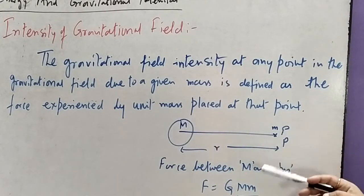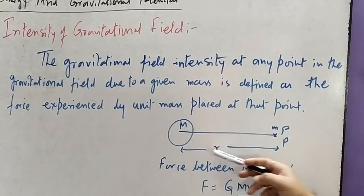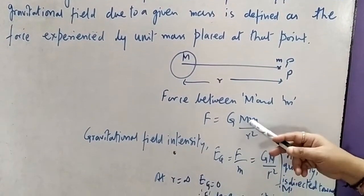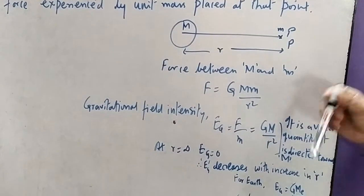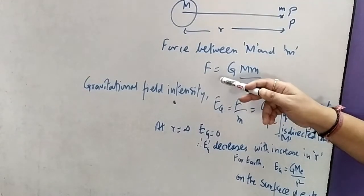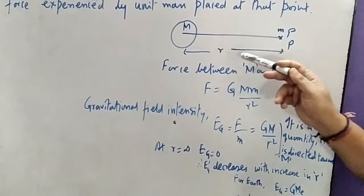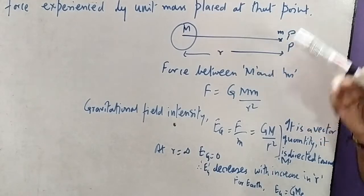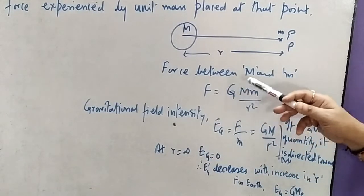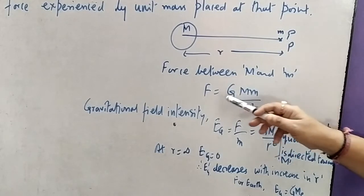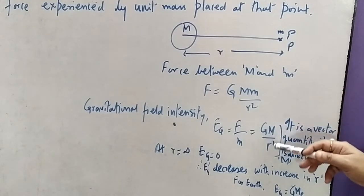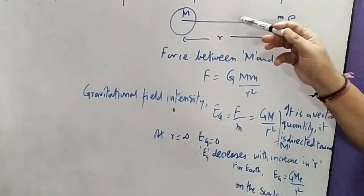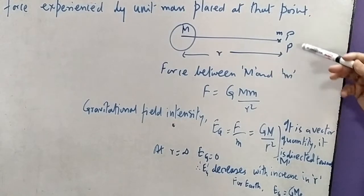We take a test mass and place it at any distance, say point P at distance R. Now the force between M and small m is capital G·M·m upon R squared. As for the vector notation, we use minus because it implies that it is the force of attraction. The gravitational field intensity is the force experienced by unit mass, so we divide F by small m, giving us capital G·M upon R squared. It is a vector quantity because it has a direction.